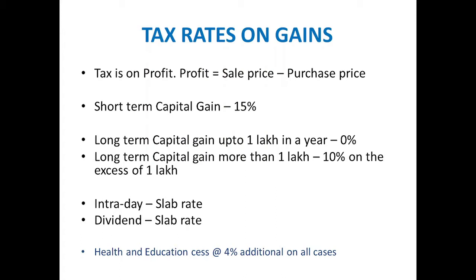For example, if you made a long term capital gain of 80,000, there is no tax. But if your long term capital gain is more than 1 lakh, then you have to pay 10% on the excess of 1 lakh. Suppose you made a profit of 1 lakh 20,000 — you pay 10% on 20,000 only.